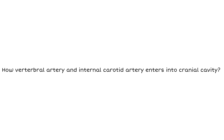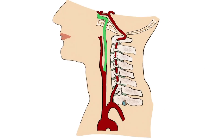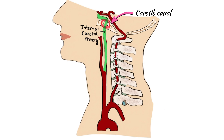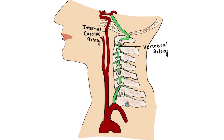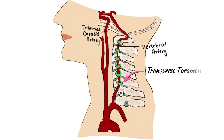Now let's see how vertebral arteries and internal carotid arteries enter the cranial cavity. The internal carotid artery, a terminal branch of the common carotid artery, enters the cranial cavity through the carotid canals on each side. The vertebral artery, a branch of the subclavian artery, enters the cranial cavity through the foramen magnum. The vertebral artery ascends in the transverse foramen of the upper six cervical vertebrae, but does not pass through the transverse foramen of the seventh cervical vertebra.